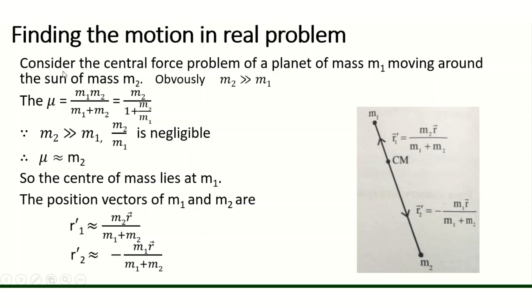The planet of mass M1 moves around the sun of mass M2. Obviously M2 is much larger than M1. The reduced mass mu equals M1 M2 by M1 plus M2, which equals M1 divided by 1 plus M1 over M2. Since M2 is very large compared to M1, M1 over M2 is negligible, and the center of mass lies essentially at M2.